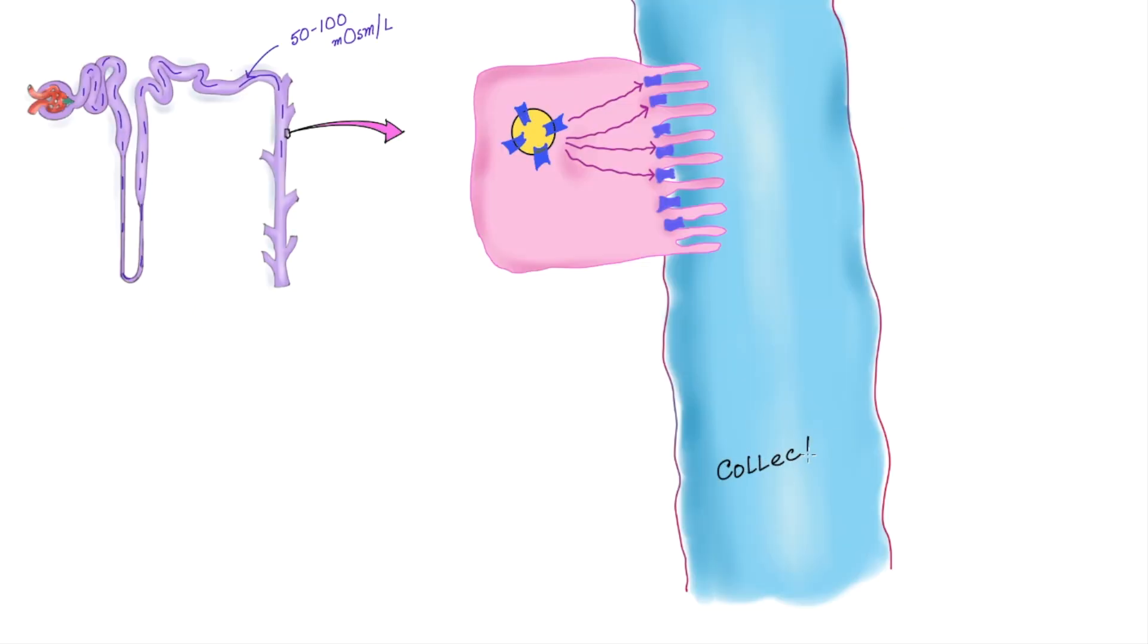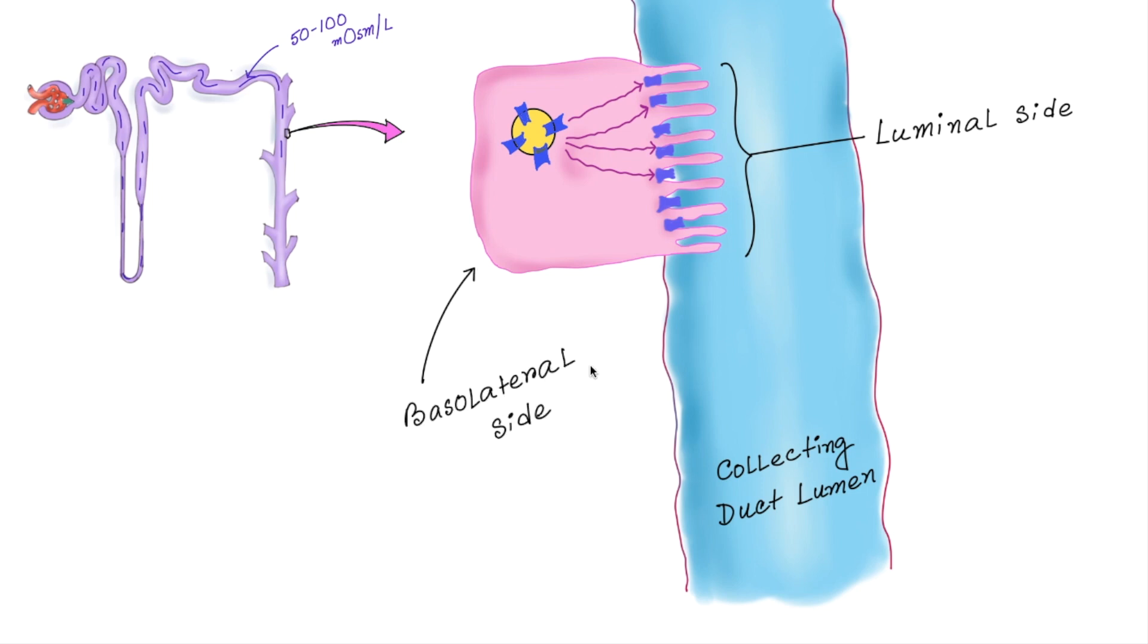Another important concept. Here you can see the collecting duct lumen. So this side of the cell is luminal side and opposite side is basolateral side. Actually there are different types of aquaporin channels. Channels which are present on the basolateral side and luminal side are different. Only luminal side aquaporin channels are regulated by ADH.